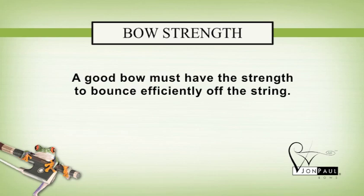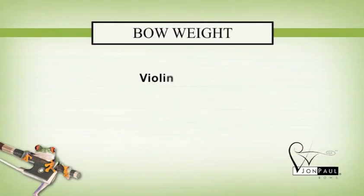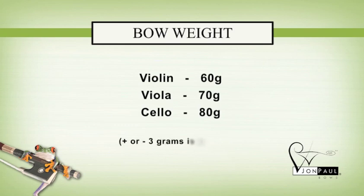The second attribute that makes a good bow is its weight. Over time, there have been general standards set for the weight of a bow: 60 grams for violin, 70 grams for viola, and 80 grams for cello. Of course, there are good bows that vary 1-3 grams heavier or lighter than the standard, but the 60-70-80 rule is easy to remember for future reference.